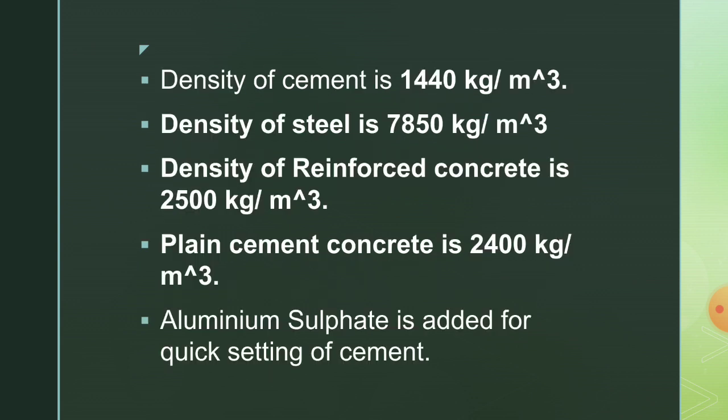The density of cement is 1440 kg per cubic meter. The density of steel is 7850 kg per cubic meter. The density of RCC is 2500 kg per cubic meter. The density of plain cement concrete is 2400 kg per cubic meter.